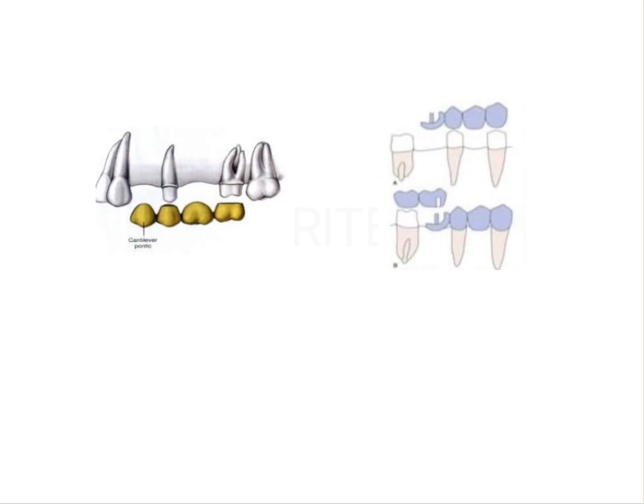Basically you can restore such cases by using a cantilever pontic. This is another treatment option where you do not provide a retainer on top of your canine, so the five unit FPD where the rigid connection is avoided and the cantilever is present in the region of your first premolar. This avoids the fulcrum on your pier abutment.